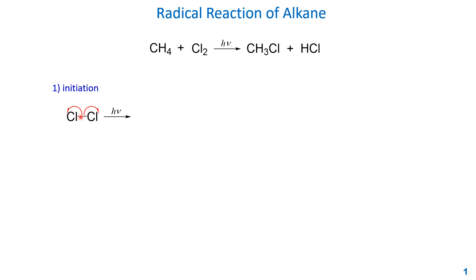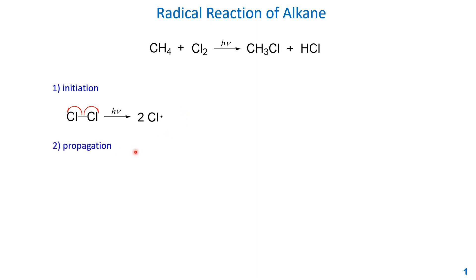The two electrons in this single bond will split to the two chlorine atoms. Since each arrow shows just one electron, we use a half arrow — it looks like a fish hook with just one barb. One electron goes to each chlorine. This first step produces two chlorine radicals. This is called a radical. Then the propagation step is the main step.